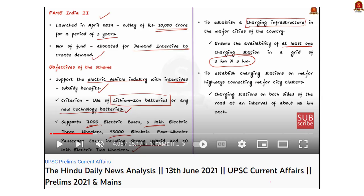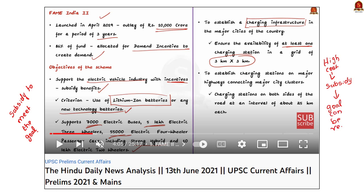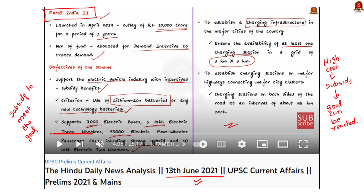Moving on to the second part: you have to write about how providing subsidies to renewable energy will help India achieve 50% renewable energy. One major issue with renewable energy is that its current cost is high compared to fossil fuels. With proper subsidy and competitive pricing, its use will increase, and with increasing use, economies of scale can be achieved — addressing associated issues. You can quote the FAME India 2 scheme, seen on 13th June 2021: due to subsidies, electric vehicle use is increasing, enabling technologies like battery swapping that further increase renewable energy use.